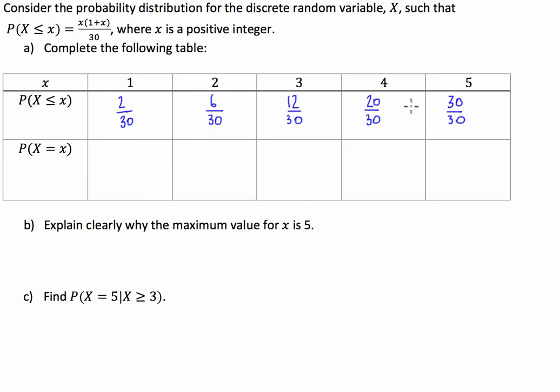So hopefully you guys are getting some ideas on how you're going to solve part b, but let's go on to the second part of this table. Now, the probability that x is equal to x. Well, number 1 is our first variable, so the probability that x is going to equal number 1 is just equal to the probability that x is going to be less than or equal to 1, because that's the only variable that we have. So this is going to be 2 over 30.